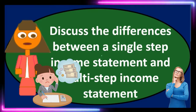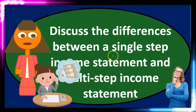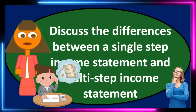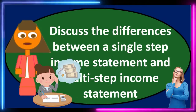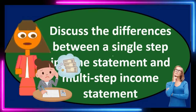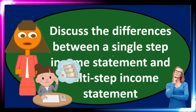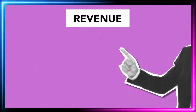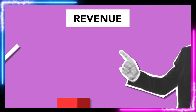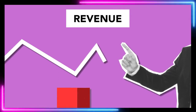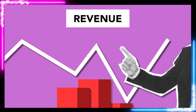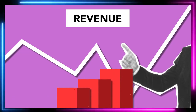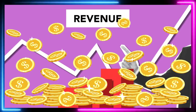The single-step income statement is the most simplified type. We're just breaking it down to the net income equation with only two components. All revenue is included in the revenue section and all expenses are included in the expense section, giving us a total revenue and total expenses, and subtracting the two gives us net income.